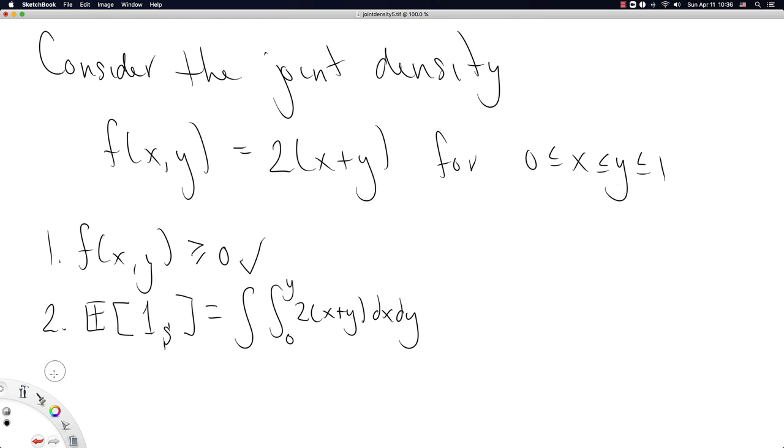So we'd have to go 0 to y for x. And then the bounds on y, after you get rid of x, and here comes the tricky part, if you get rid of x because you've integrated over it already, then the bounds remaining on y are 0 to 1.